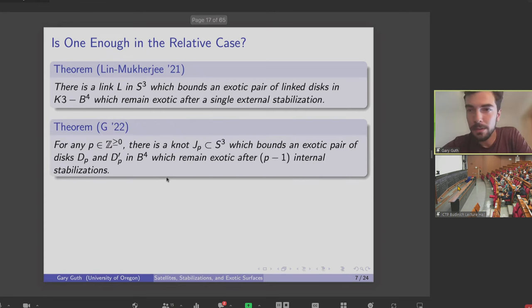And our main result is that there's an analogous thing for this internal stabilization. So we show that for any positive integer P, there's some knot J sub P in S3, which bounds a pair of exotic disks, DP and DP prime in the four ball. And moreover, these disks remain exotic after P minus one internal stabilizations, so attaching P minus one tubes.